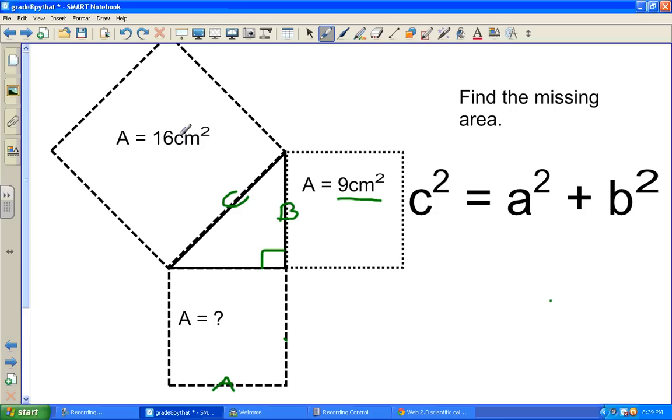If you take this one here and multiply this side times this side, because remember, the area of a square is the side squared. So whatever the side was, square it, and you get 16. So whatever something times something must give us 16.